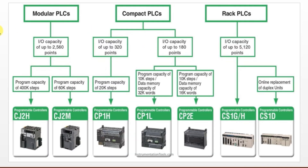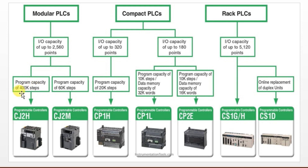In Omron's range, we have modular type PLC, compact type PLC, and rack type PLC. The Omron models include CJ2H, CJ2M, CP1H, CP1L, CP2E, CS1G-H, and CS1D. These types are classified into three categories. For modular PLC, the CJ2H supports up to 2560 IOs with 400K steps program capacity, and the CJ2M supports 600K steps.